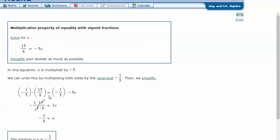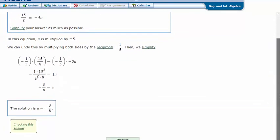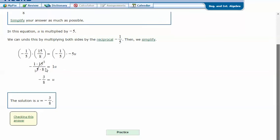If I multiply this side by negative 1/5, I have to multiply this side by negative 1/5 also. So negative 1 over 5 times positive 15 over 8. The 5 and 15 can cross cancel because 5 divided by 5 is 1 and 15 divided by 5 is 3. In the numerator we have negative 1 times positive 3, and down here we have 1 times 8.